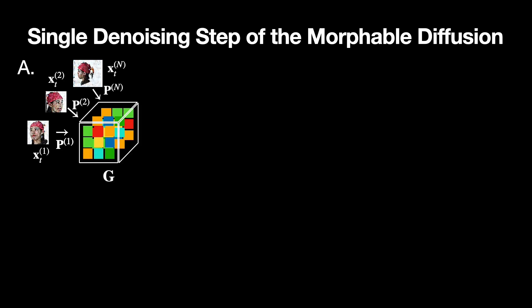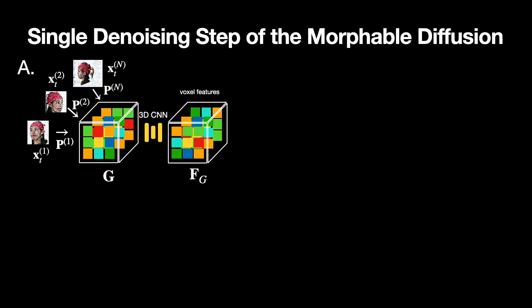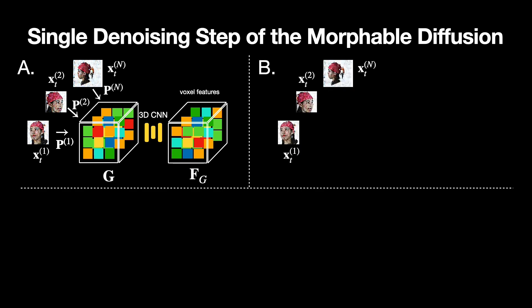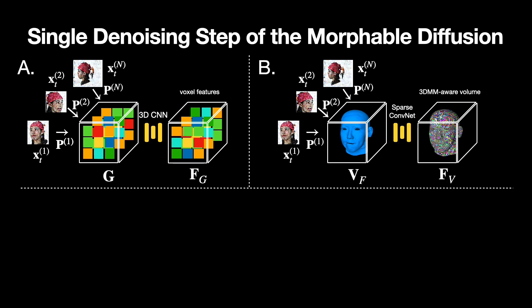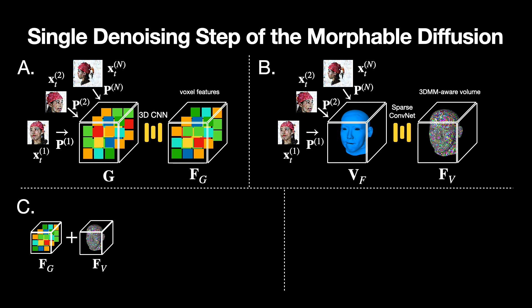A single denoising step of our method consists of four parts. First, a noise feature volume is constructed by lifting and processing the 2D noise features into a 3D volume, which is processed by a 3D CNN to produce a spatial feature grid. Next, a morphable noise volume is constructed by attaching the 2D noise features onto mesh vertices that are processed by a sparse ConvNet to output a 3D morphable-model-aware feature volume.